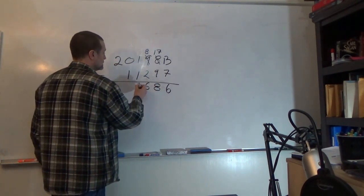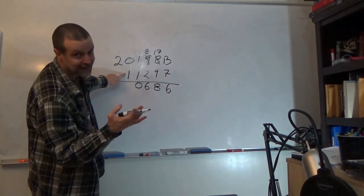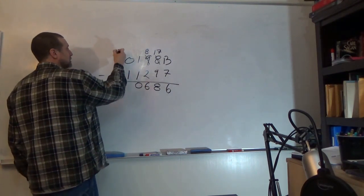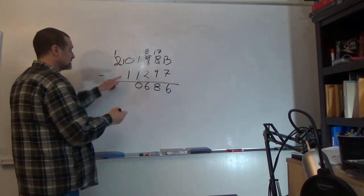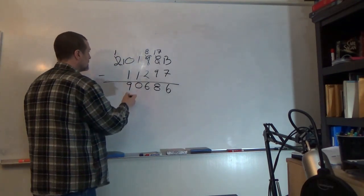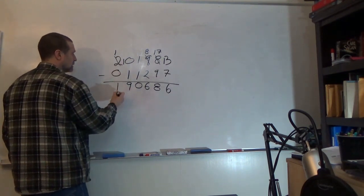One minus one is zero, zero minus one, nine. And one minus zero is one.